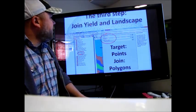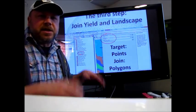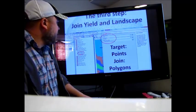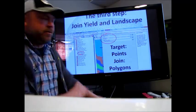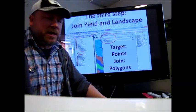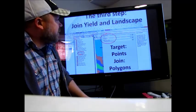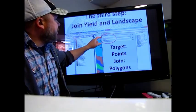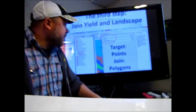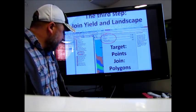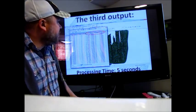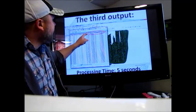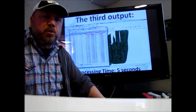Your third step then would be to join the yield points with the landscape classes, so the polygons with the points. Your third tool set here is called Corn Classes. Your target features are going to be the point shapefile and your join features are going to be the land class polygons that you just created. You're going to run this tool and it's going to join up the yield with the landscape classes. The output of this is going to be a point shapefile.